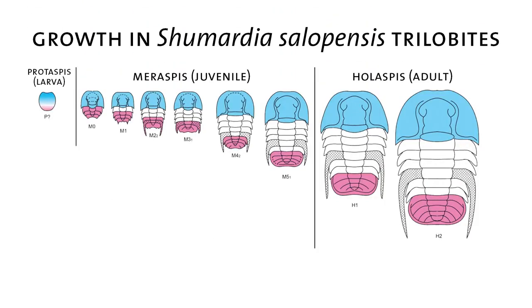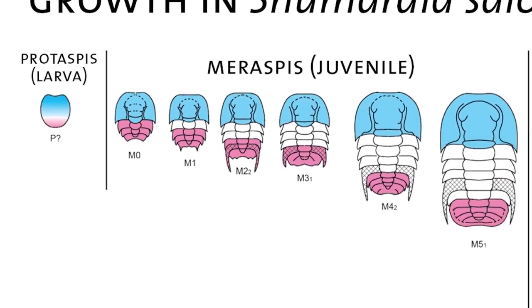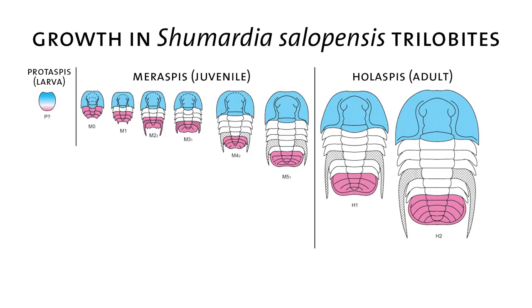The reason it looks like that is because every time the trilobite molted, it added a new segment at the very back of the body and released a segment from the pygidium, the pink part, the tail, into the middle thorax. So if you look here from this very early stage labeled M0 to M1, it's that very front segment in the pygidium, the pink part, that's being released into the thorax. And it looks like it's moving forward because another segment is being added at the back. And then when you get a feature that's associated with just one segment, like the spine, you can actually watch it travel through the pygidium as more segments are added behind until it gets released into the thorax and then continues to stay, in this case, at the fourth segment as more segments are added.